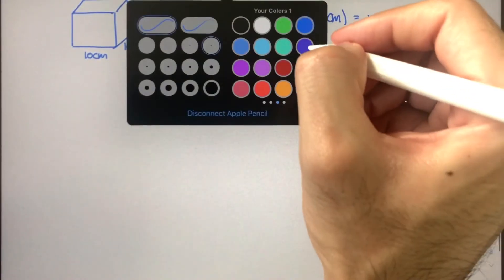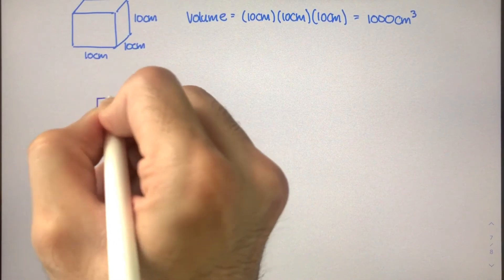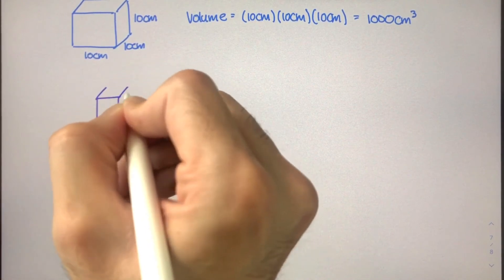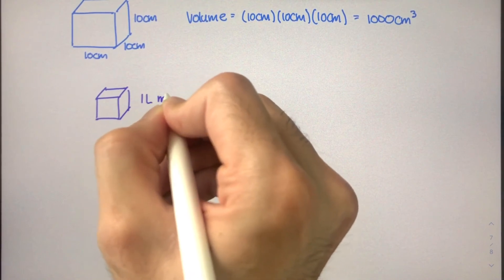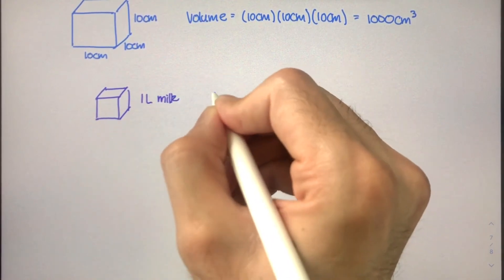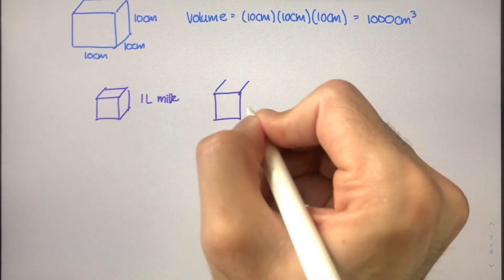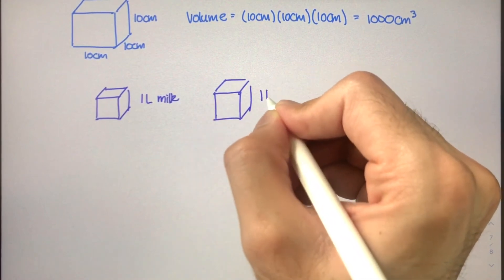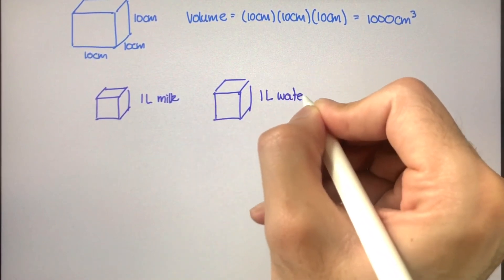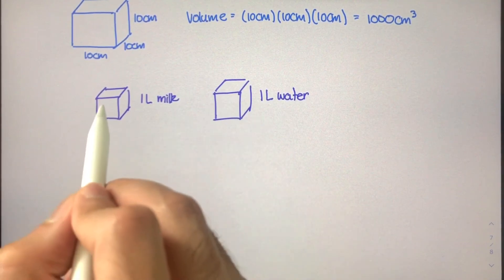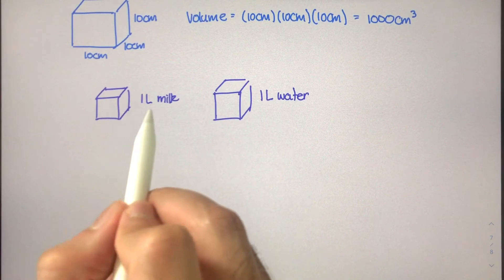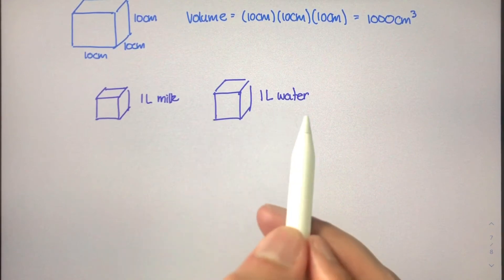So if we had one liter of milk here, this is one liter of milk, and then next to it we had one liter of water. These two volumes are the same, and sorry if this looks a little bit bigger than this. Just know that each one is one liter.